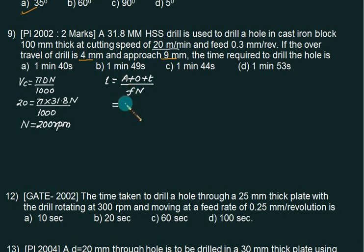Approach is given as 9mm, over travel is 4mm, thickness is 100mm. Divide by feed 0.3 and N 200 RPM. This gives approximately 1 min 49s. This one is the close answer, so you have to take this answer.